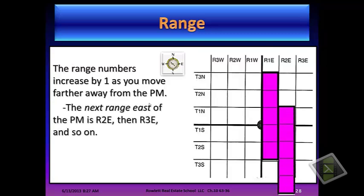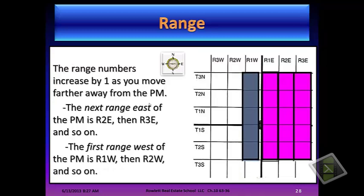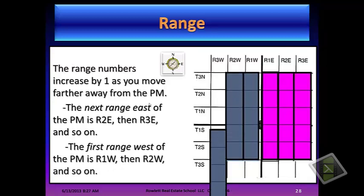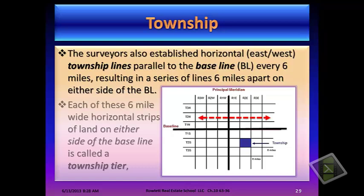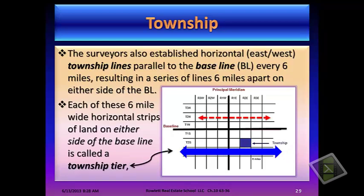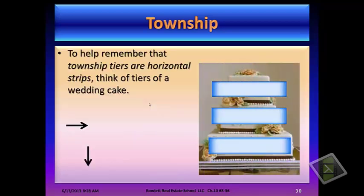The next range east of the principal meridian is R2E, then R3E, and so on. The surveyors also established horizontal east and west township lines parallel to the baseline every six miles, resulting in a series of lines six miles apart on either side of the baseline. Each of these six-mile wide horizontal strips of land on either side of the baseline is called a township tier.